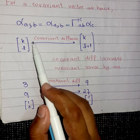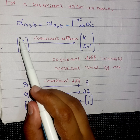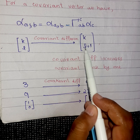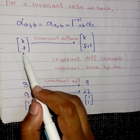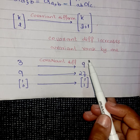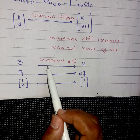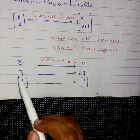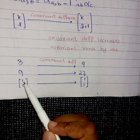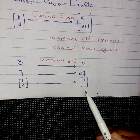One point to keep in mind: covariant differentiation increases the lower rank by one. If the tensor type was previously (k, l), it becomes (k, l+1) — it increases the rank by one in the lower index. For example, if the rank was previously three then after covariant differentiation the rank will be nine; if the balance is (1, 0), after covariant differentiation it becomes (1, 1).